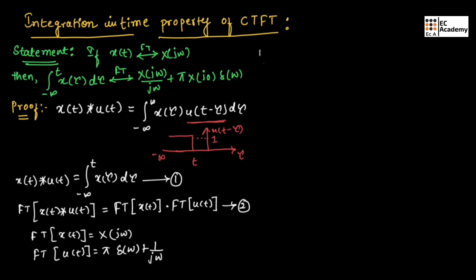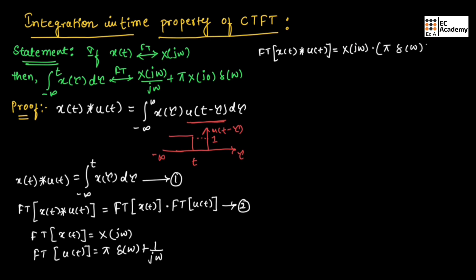Then, we will obtain the Fourier transform of x of t convoluted with u of t. We can write this as x of j omega into pi delta of omega plus 1 by j omega. Now, if we multiply out the x of j omega term, we will obtain x of j omega divided by j omega plus pi times x of j omega into delta of omega.